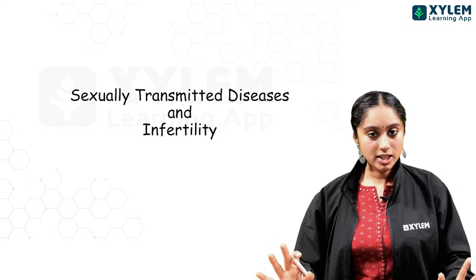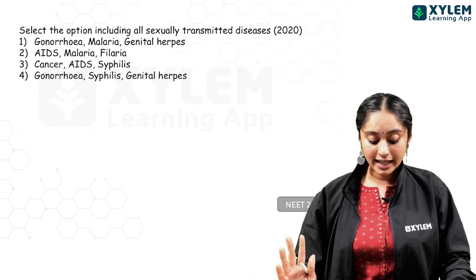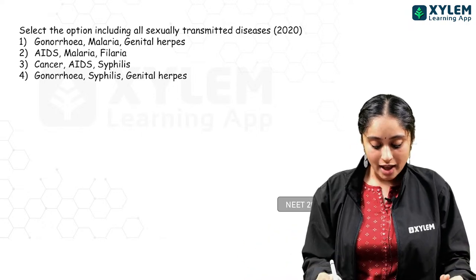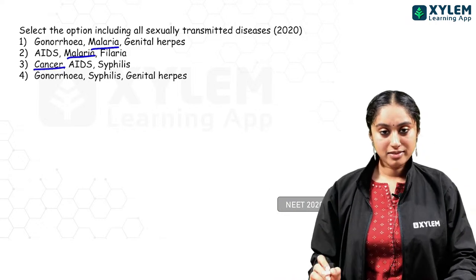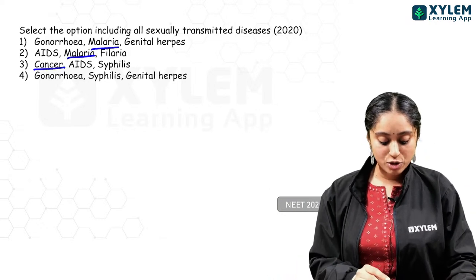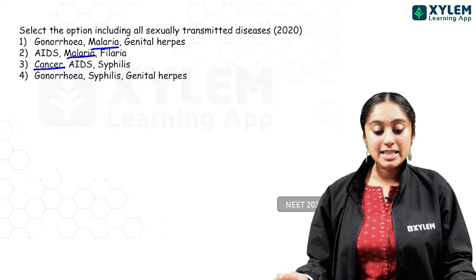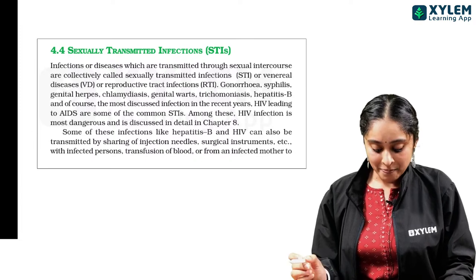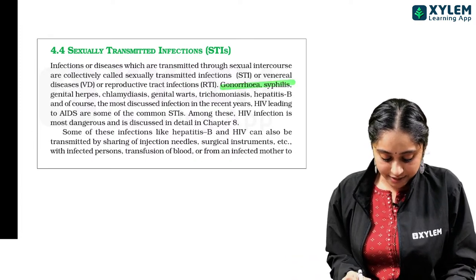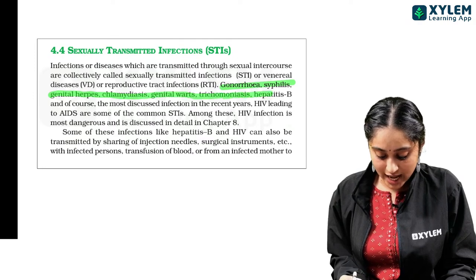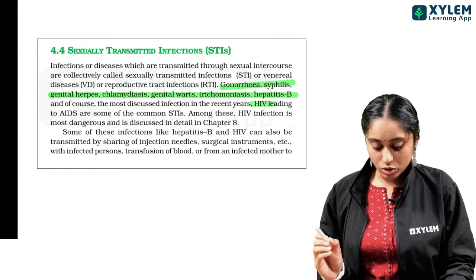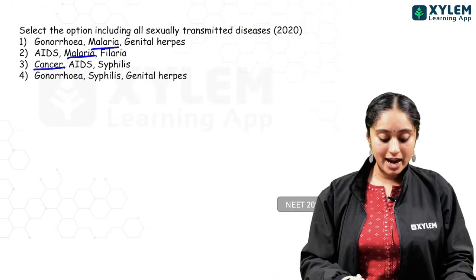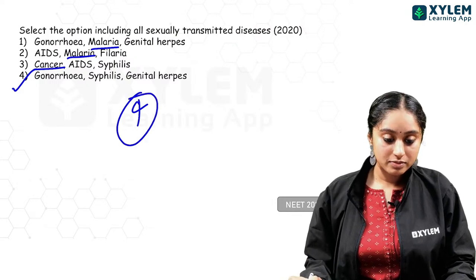STDs and infertility section. NEET 2020: select the option including all STDs. Malaria and cancer are not STDs. The correct option includes gonorrhea, syphilis, and genital herpes. From NCERT, STDs include: gonorrhea, syphilis, genital herpes, chlamydiasis, genital warts, trichomoniasis, hepatitis B, and HIV. Option 4 is the answer.